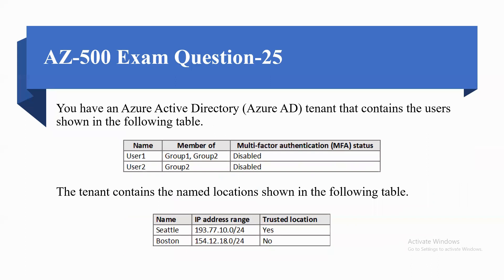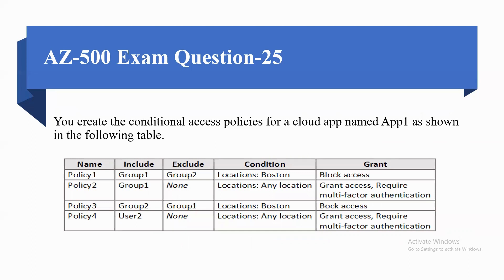Coming to the next question. You have an Azure AD tenant that contains users as shown in the following table. User 1 is a member of Group 1 and Group 2, with MFA status disabled. User 2 is a member of Group 2, with MFA status also disabled. The tenant contains named locations as shown in the table, with CTL and another location having specified IP address ranges and trusted location settings. You create conditional access policies for a cloud app named F1 as shown in the table with four policies.